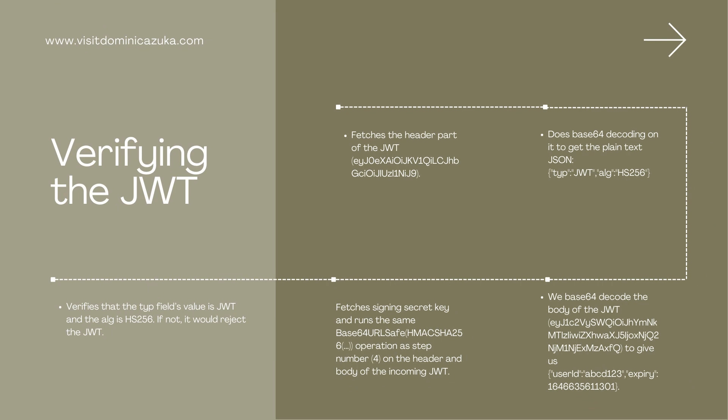There are certain steps JWT takes to verify the data it receives. First, it fetches the header part of the JWT. Then it performs BASE64 decoding on it to get the plain text and the algorithm being used. Once it's verified that the type field value is JWT and the algorithm is correct, it proceeds to the next step. If not, it will reject the JWT. The next step involves fetching the secret key, which may be stored in an environment variable, and runs a BASE64 URL operation on the header and body of the incoming JWT.